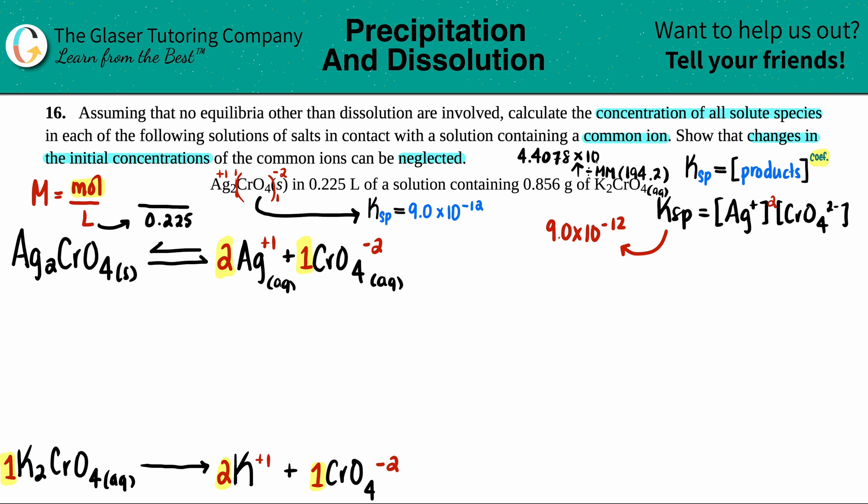My moles are 4.4078 times 10 to the negative third. I'll take my mole value 4.4078 times 10 to the negative third and divide by the liters. That will be the molarity of K2CrO4. 4.4078 times 10 to the negative third divided by 0.225.